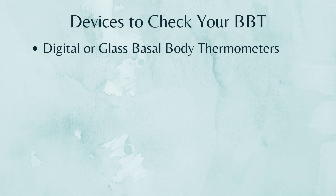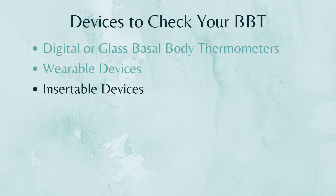There are also wearable devices such as the Oura Ring, the Ava bracelet, and the TempDrop, which is worn around the upper arm. And the last category is insertable devices — I'm only familiar with one, and that is Ovusense. I am most familiar with and honestly a fan of digital basal body thermometers. They tend to be the least expensive and easiest to get. I'll link to my favorite one in the description box below. You'll want to read the instruction manual that comes with whichever device you choose, because it's only by following the manufacturer's instructions that you can actually trust the results.